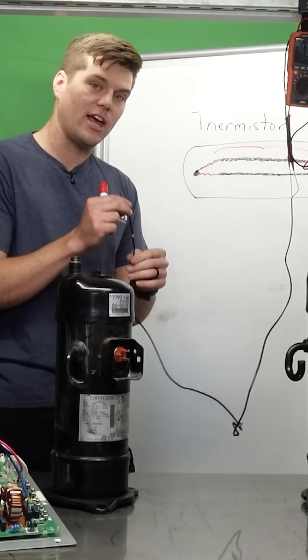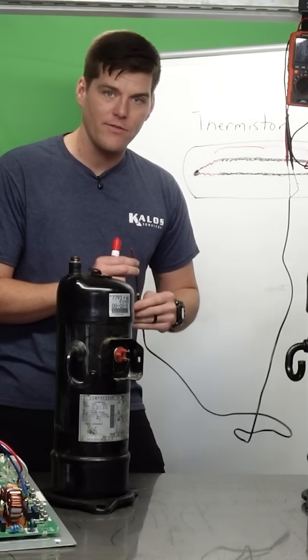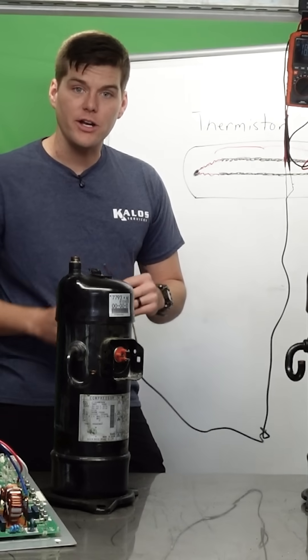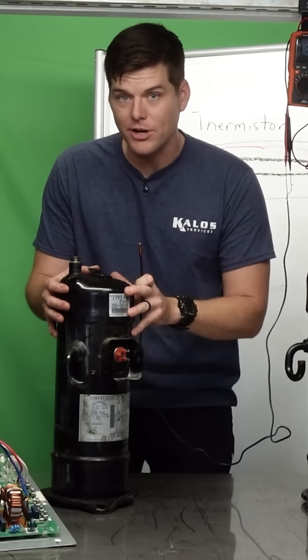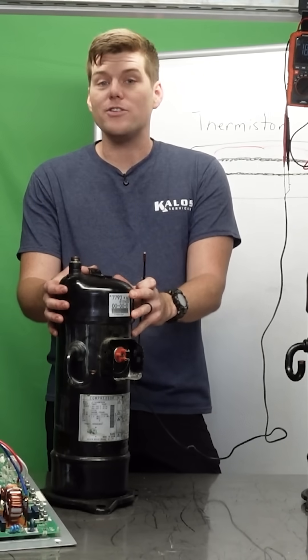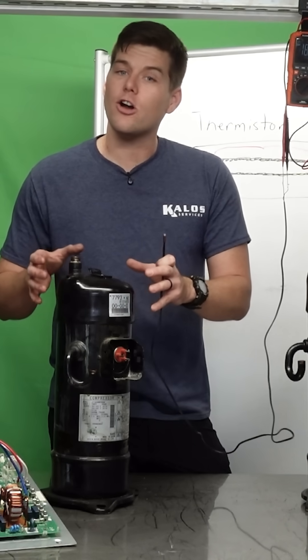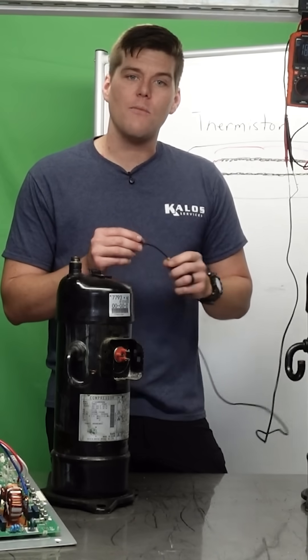When you add resistance to a circuit like this, now the temperature is off by 5 degrees, by 10 degrees, by 20 degrees. What if this thermistor is designed to protect a compressor from liquid refrigerant entering? Well, if it's off by 20 degrees, it's no longer protecting that compressor, and that's how important it is to